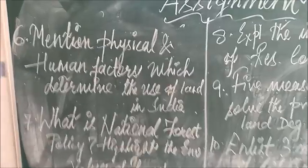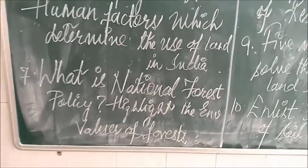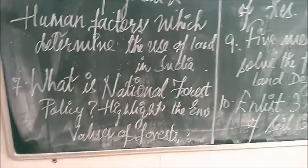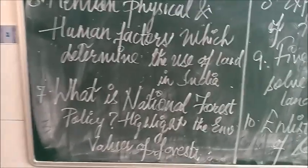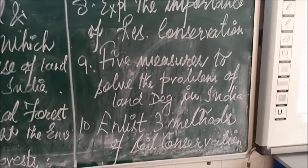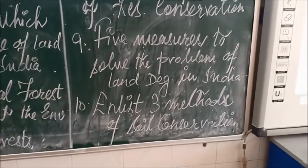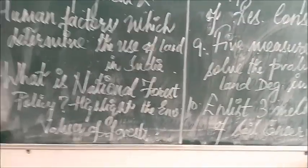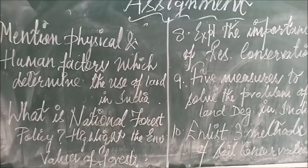Continuing the assignment: Question 6: Mention physical and human factors which determine the use of land in India. Question 7: What is the national forest policy? Highlight the environmental values of forests — for this question, please go through the book to find the answer from the highlighted resources section. Question 8: Explain the importance of resource conservation. Question 9: Five measures to solve the problem of land degradation in India. Question 10: List three methods of soil conservation. After doing this assignment, finding the answers, writing neatly, and making the table, you are going to paste it in your notebooks for your grades.